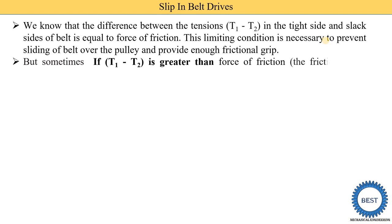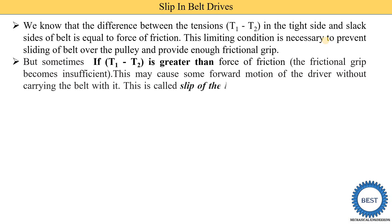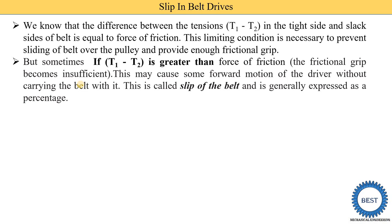But sometimes if T1 minus T2 is greater than the force of friction, the frictional grip becomes insufficient — meaning friction between the belt and the pulley is reduced. This may cause some forward motion of the driver pulley without carrying the belt with it, meaning only the driver pulley rotates but the belt does not move. This is called slip.